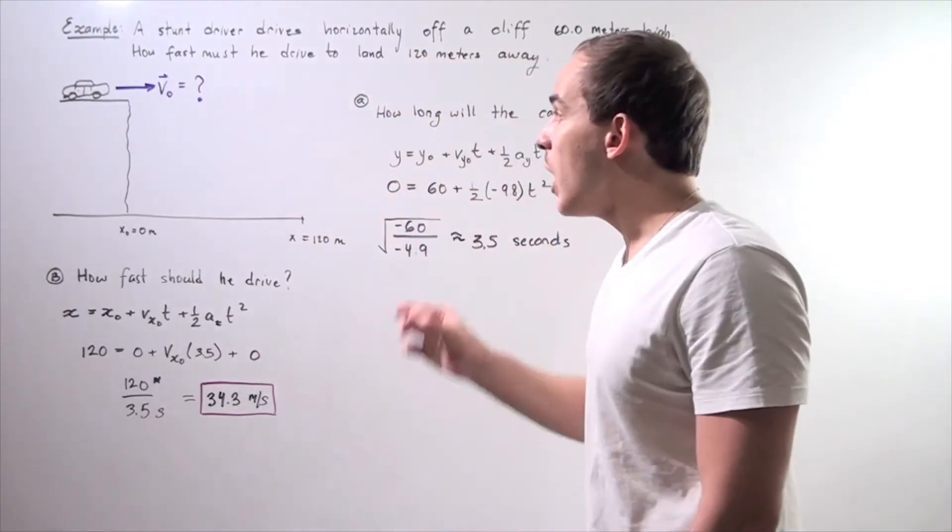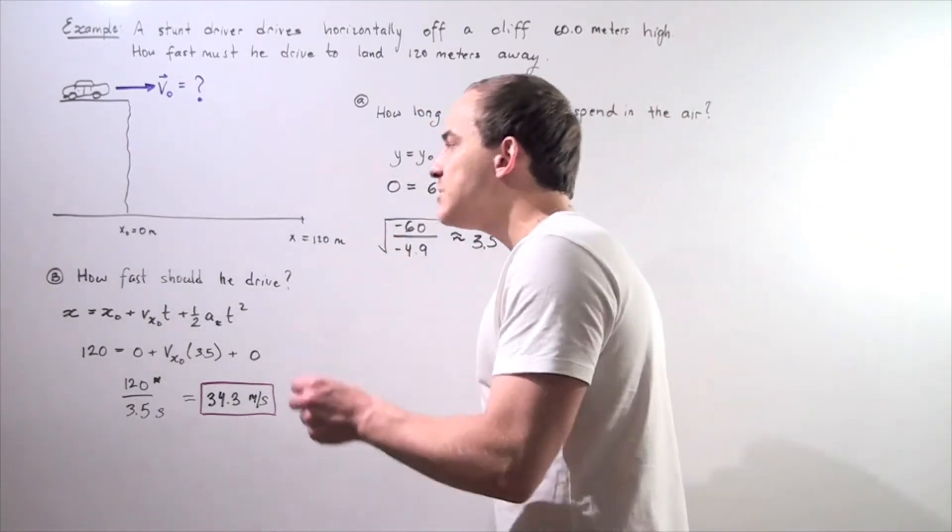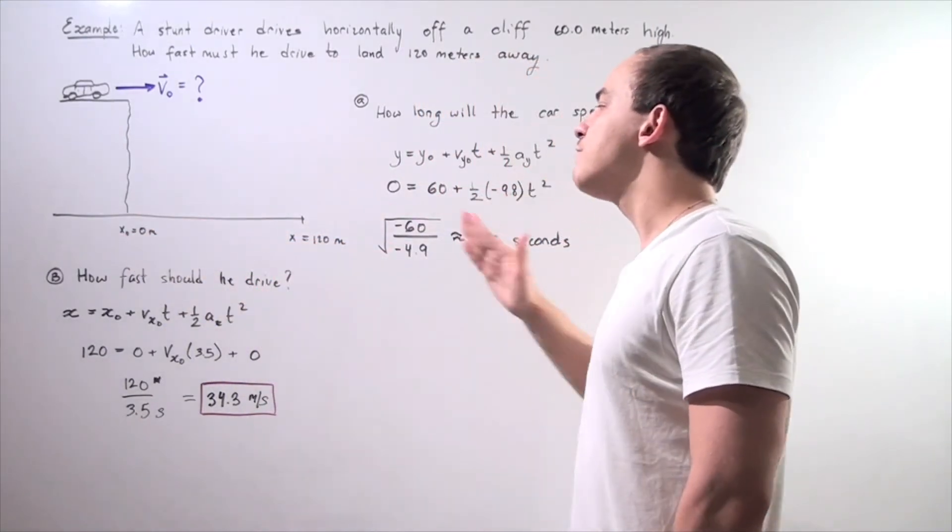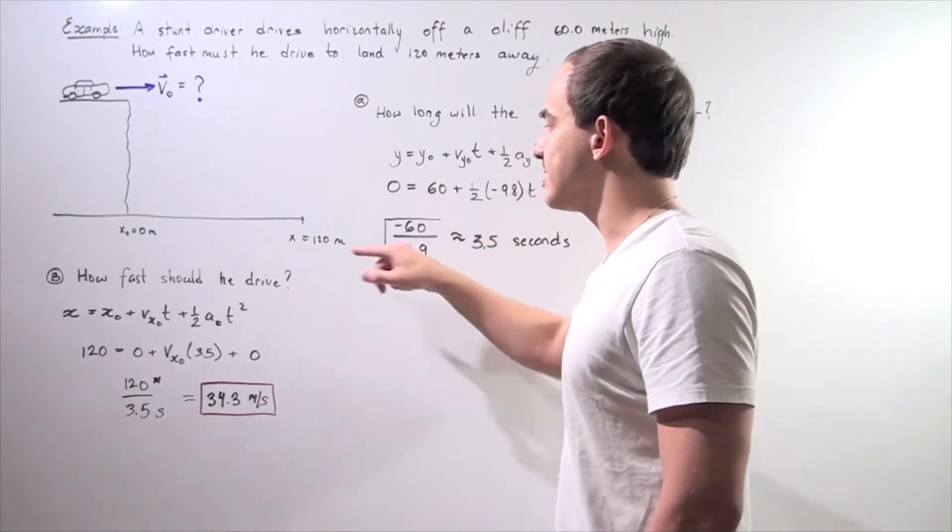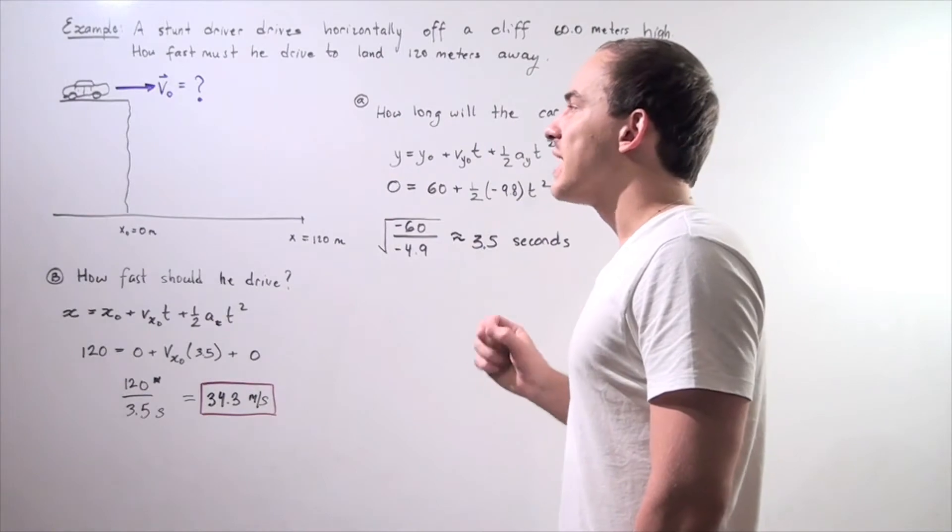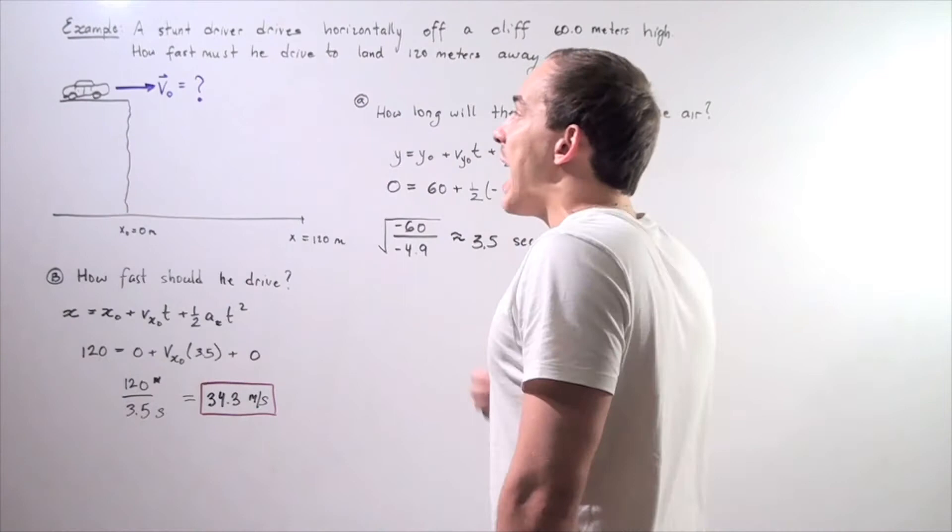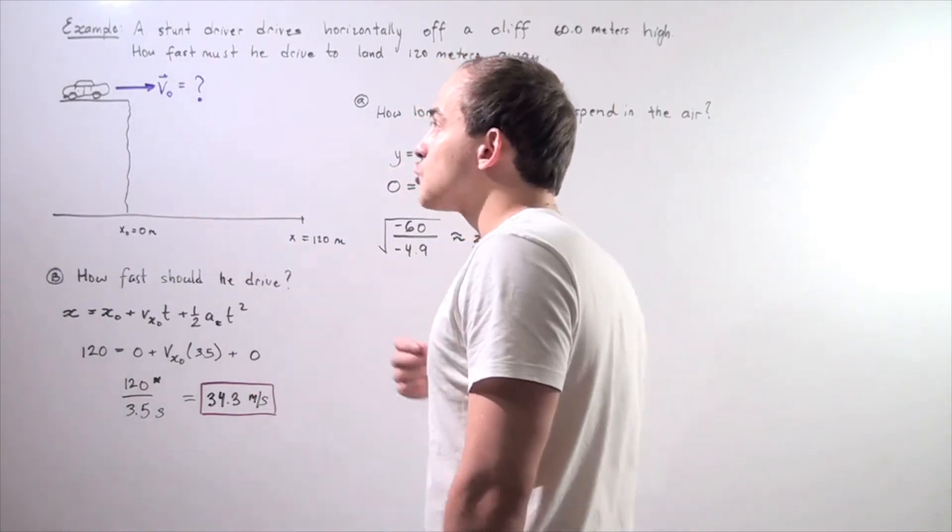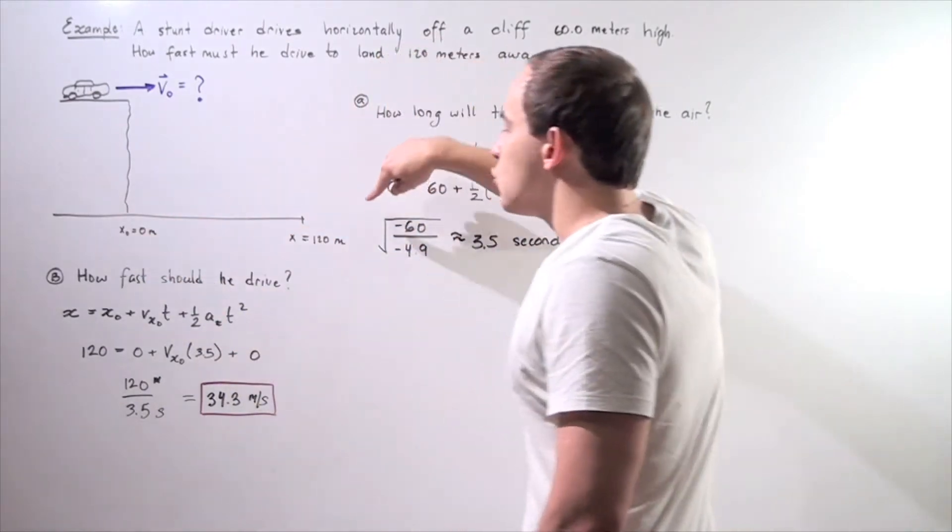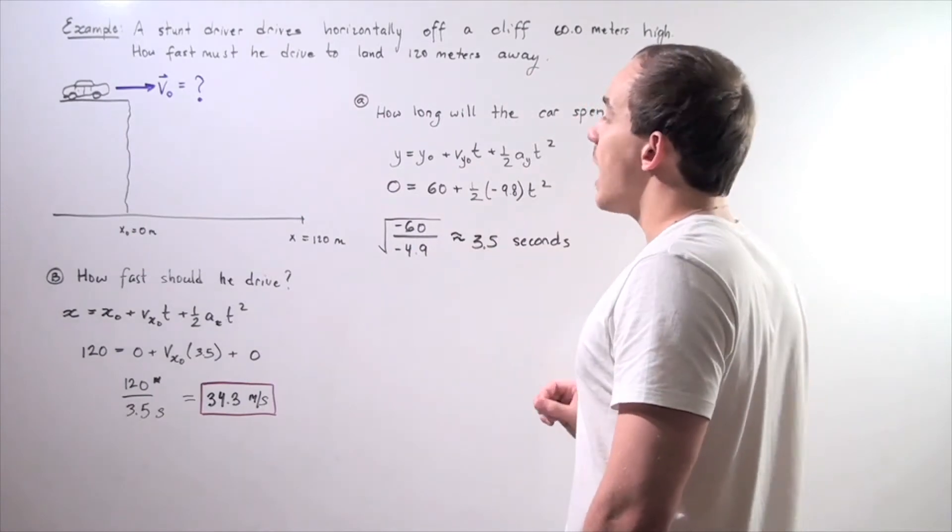How fast must he drive to land 120 meters away? So our initial position along the x-axis, x-naught, is 0 meters, and our final position along the x-axis is x equals 120 meters. What we want to find is our initial velocity along the x-axis. So how fast must the car drive off horizontally to make it from our zero mark to our 120 meter mark, 120 meters away from our 60 meter high cliff.